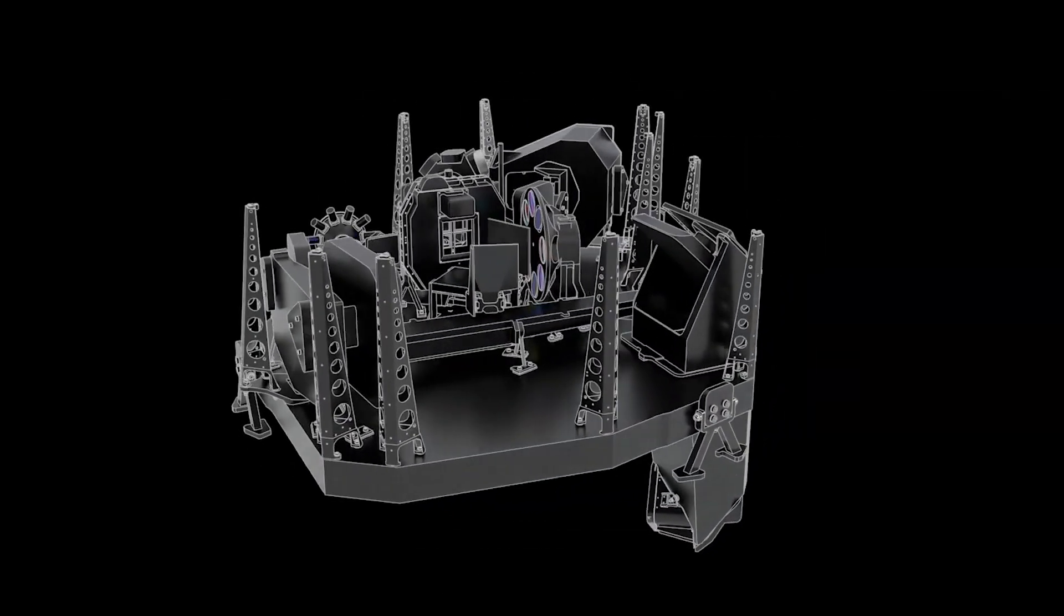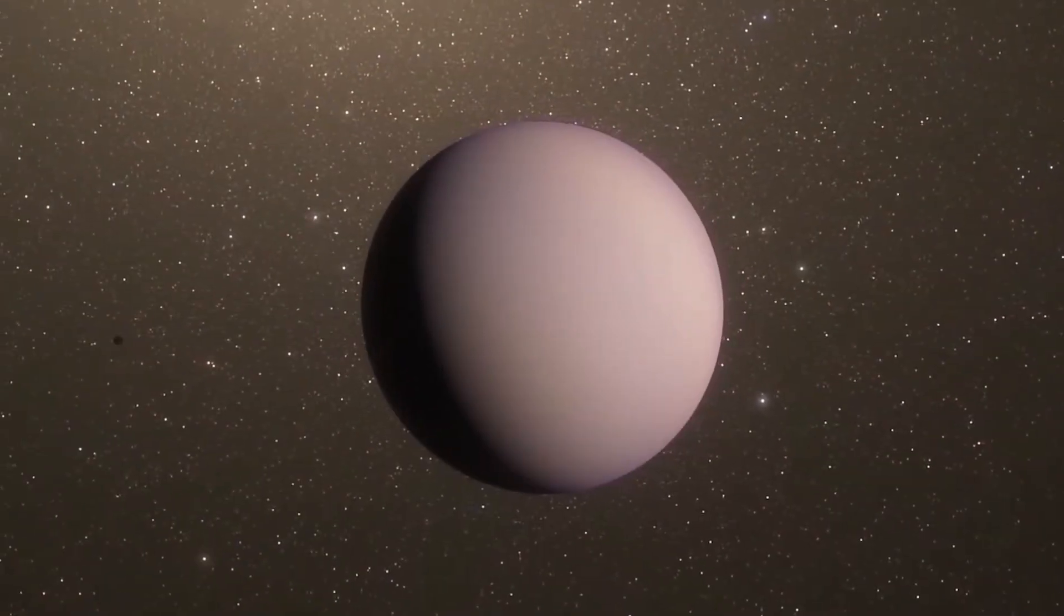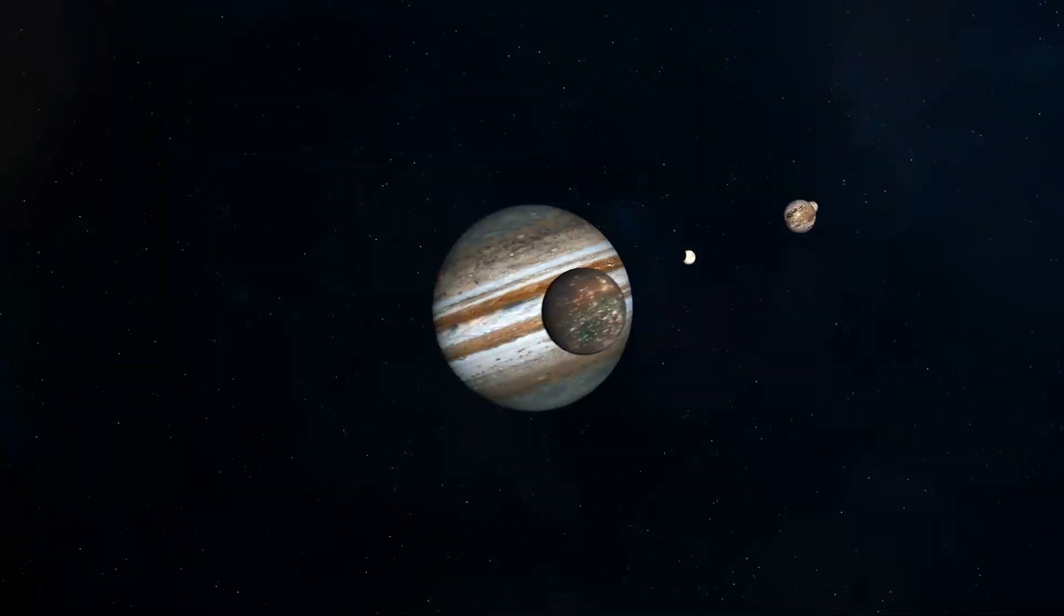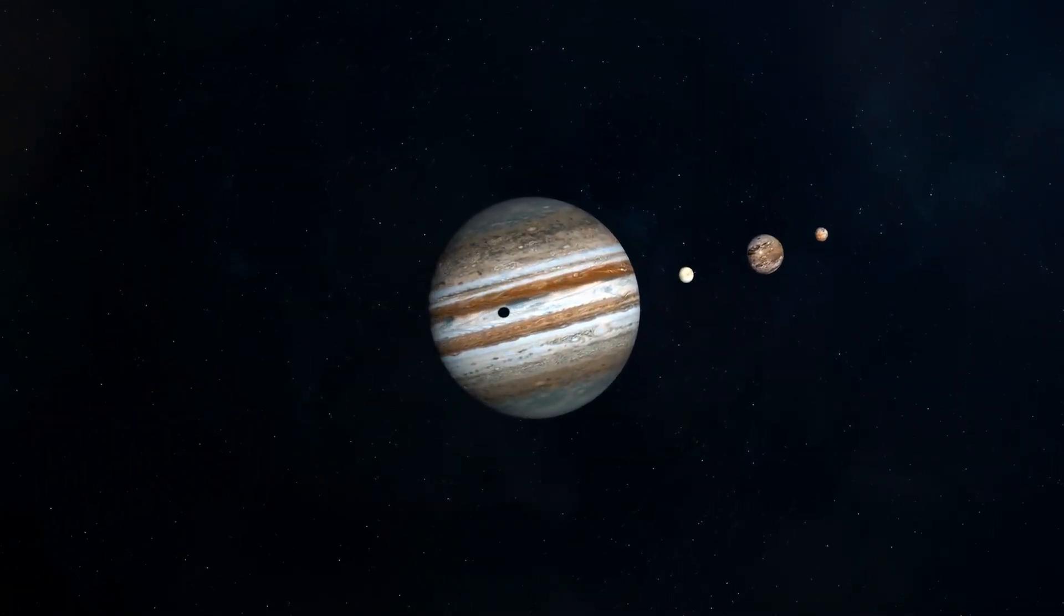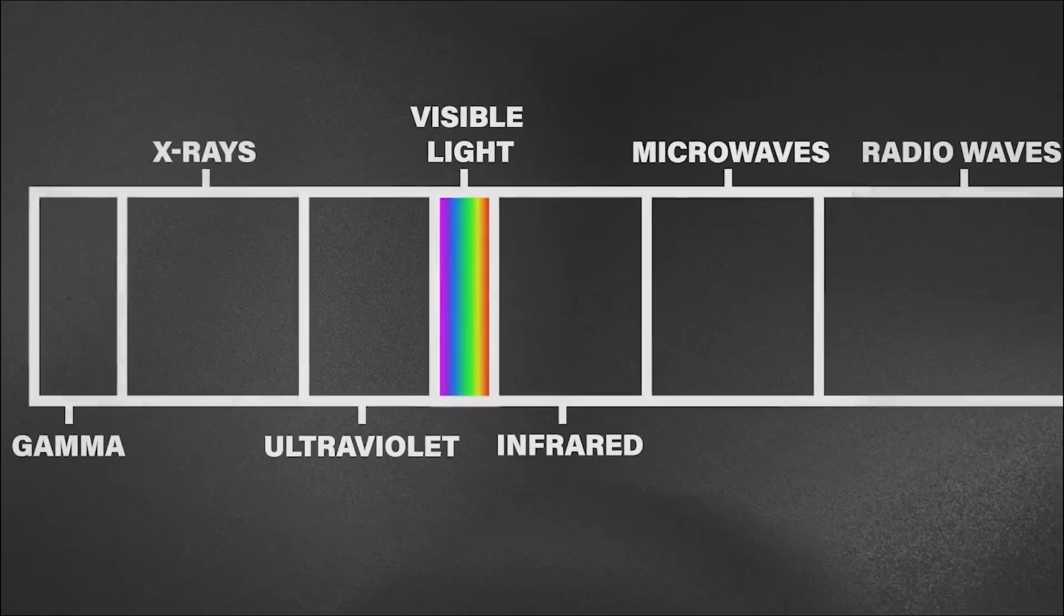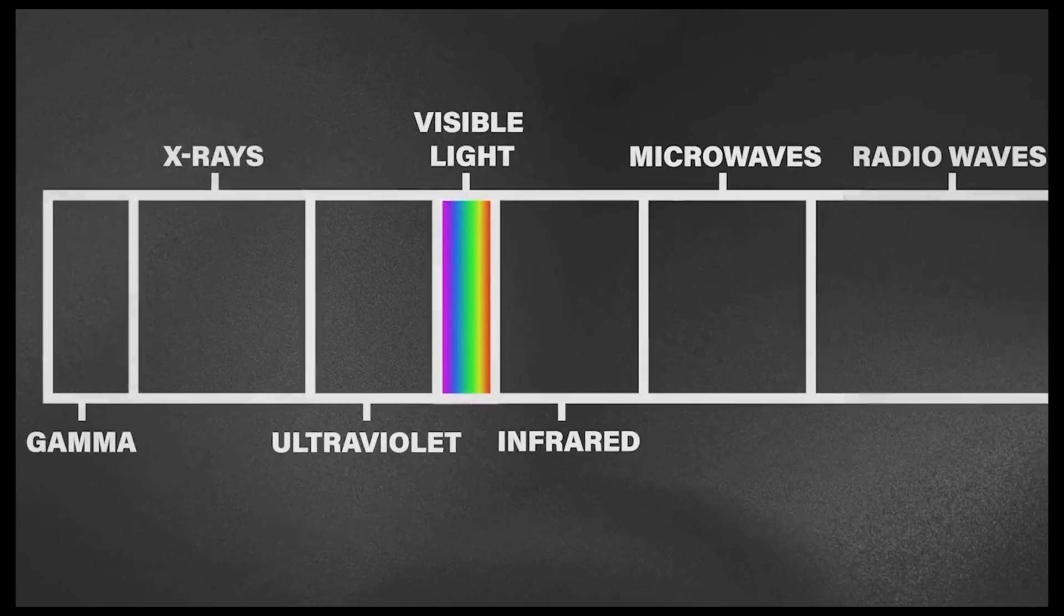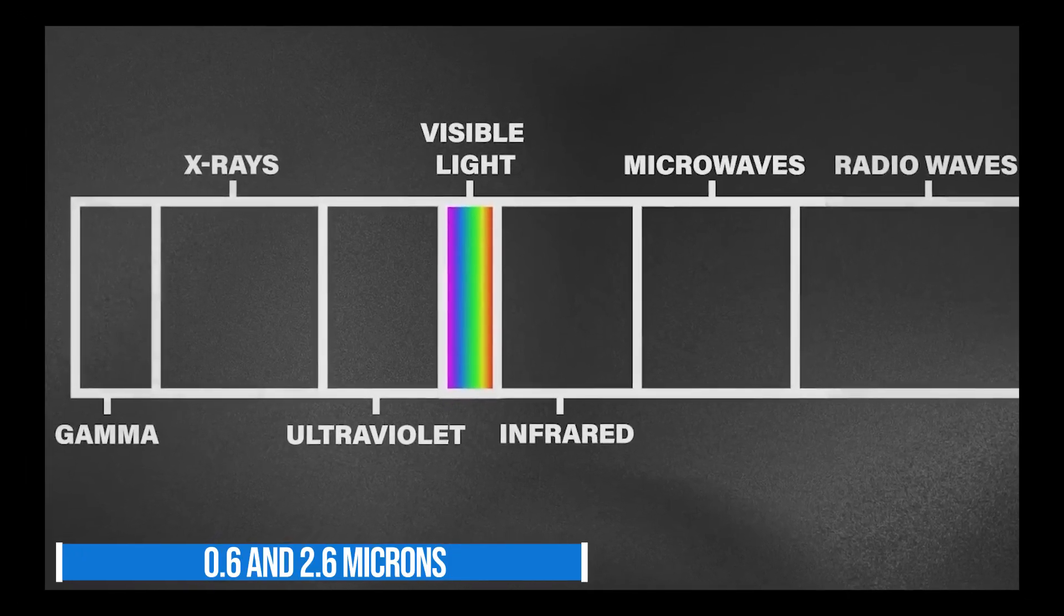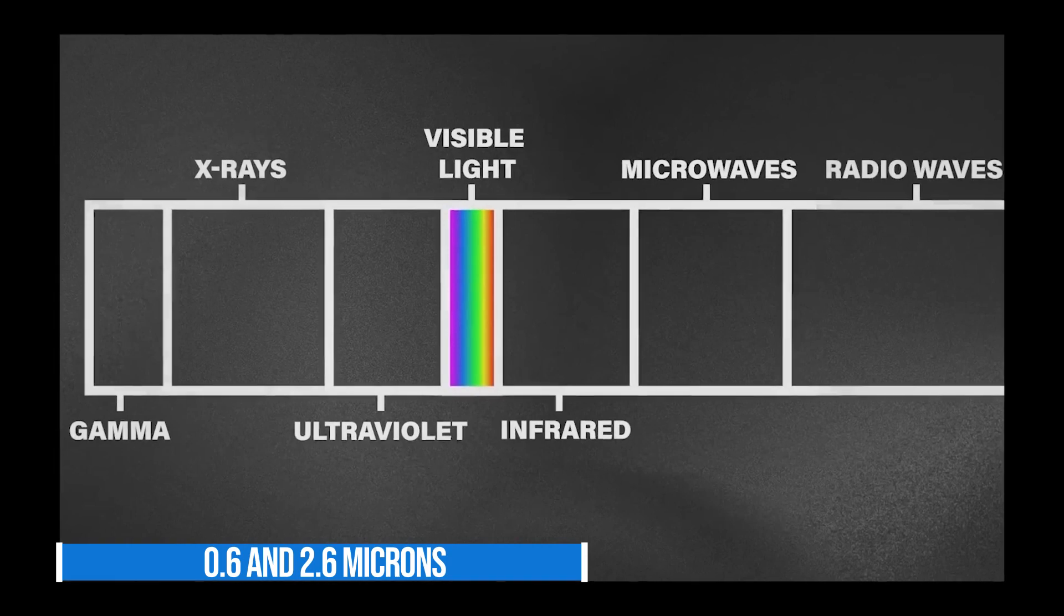Webb's near-infrared imager and slitless spectrograph, or NIRISS, measured light from the WASP-96 system for 6.4 hours as the planet moved across the star. This resulted in a light curve showing the overall dimming of starlight during the transit, and the transmission spectrum revealed the brightness change of individual wavelengths of infrared light between 0.6 and 2.6 microns.